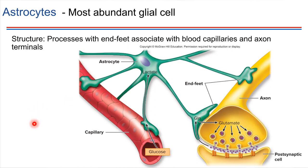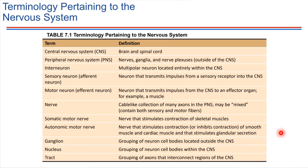Those are some of the things that astrocytes do, and I have a lot of these listed out on the next slide. Finally, there is a table — Table 7.1 — that's a useful reference in case you forget what some of these different terms are that we've been using, such as what is a motor neuron or what is the peripheral nervous system. It does a nice job of capturing a lot of these different definitions.